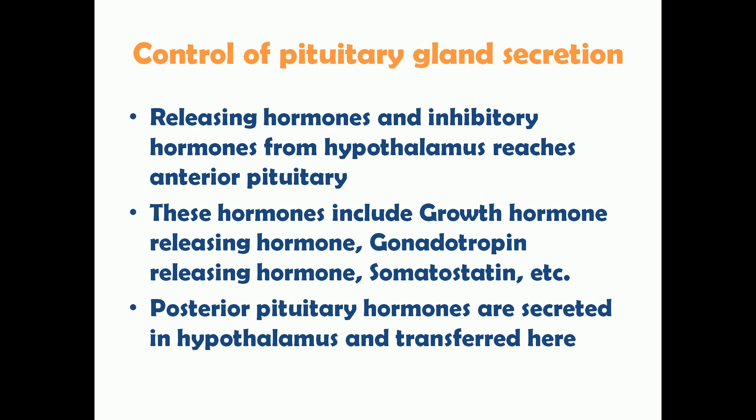The endocrine function of the hypothalamus involves controlling pituitary gland hormone secretion. The hypothalamus secretes releasing and inhibitory hormones that travel via blood vessels to the anterior pituitary. These include growth hormone releasing hormone (acts on somatotropes to increase growth hormone), gonadotropin releasing hormone (stimulates FSH and LH secretion), and somatostatin (decreases growth hormone secretion). Posterior pituitary hormones are actually secreted by the hypothalamus, transferred to the posterior pituitary, stored, and released when required.